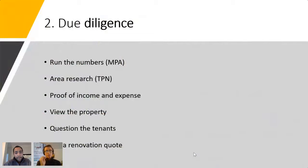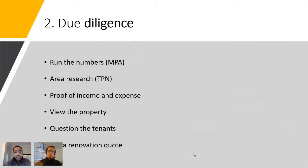These are the steps I would recommend you do — the steps that me and Thierry are going through with his first investment. Number one: run the numbers. Number two: research. Number three: get proof of income and expense. Number four: go view the property. Number five: question the tenants. Number six: get a renovation quote if applicable.